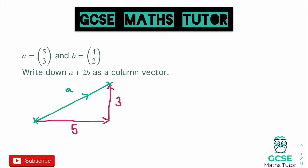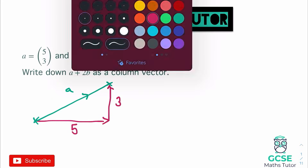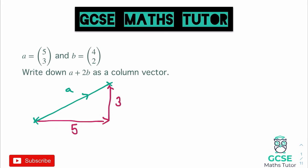That right there would be vector A. The actual vector itself is that vector with the indicated arrow showing the direction it's gone in. We could do exactly the same for vector B — it's going to go right by 4 and up by 2. Essentially what we're being asked to do is combine these vectors.